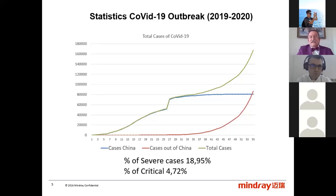Importantly, the percentage of severe cases that require medical treatment is 19%, and from that, about 5% — specifically 4.7% — are critical and need intensive care unit and artificial respiration.